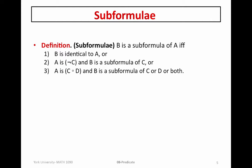If A has the form C circle D, where circle is any of our other Boolean connectives, then B is a sub-formula of A if it's a sub-formula of either C or D, or both of them. And finally, if A is of the form for all X C, then B is a sub-formula of A if B is a sub-formula of C.